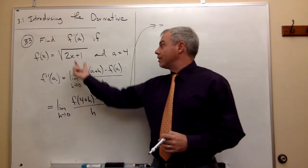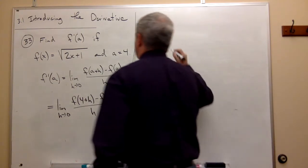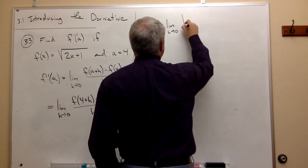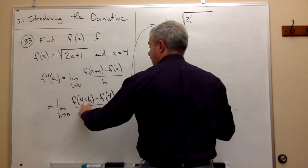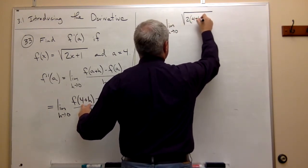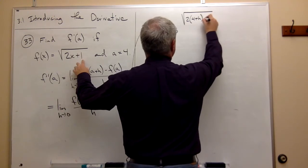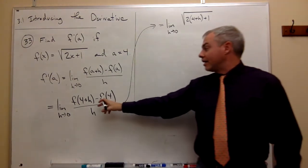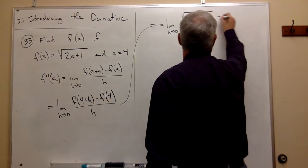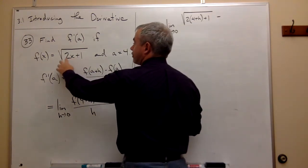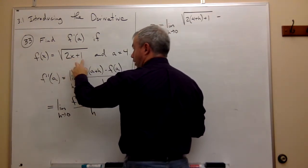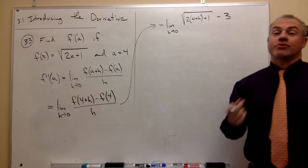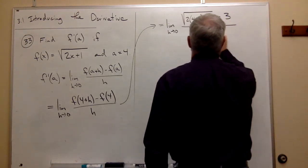So if I plug in 4 plus h for x up here, this is what I'll get. So I get the limit as h goes to 0 of square root of 2 times 4 plus h plus 1. So that's f of 4 plus h. Then I need to look at minus f of 4. So minus if I plug 4 in up here, I get 2 times 4 which is 8 plus 1 is 9 and the square root of 9 is 3. So I need to subtract 3 all divided by h.